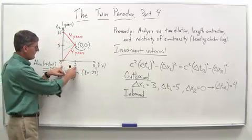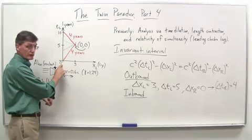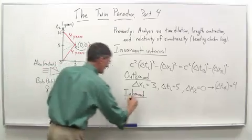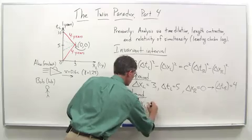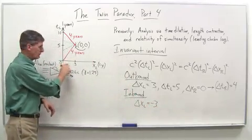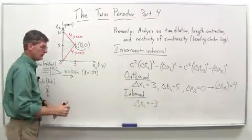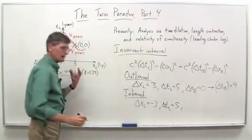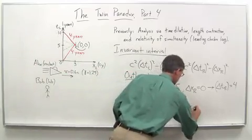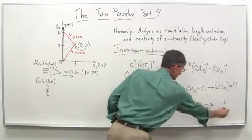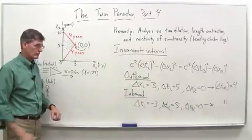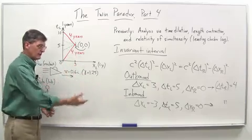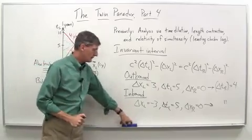For the inbound trip, notice that as far as Bob is concerned, Alice ends up at zero and starts at three. So delta XL is negative three — zero minus three. Delta TL still equals five years. Delta XR is zero again. And once again you get delta TR equals four when you work that out. So that's the invariant interval approach — it can be useful in certain cases just to get a quick answer.